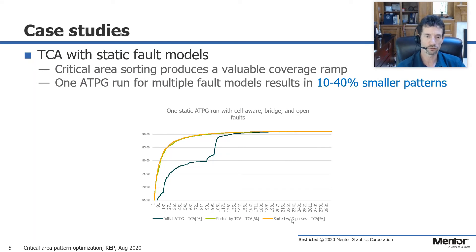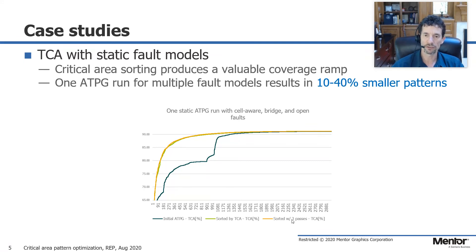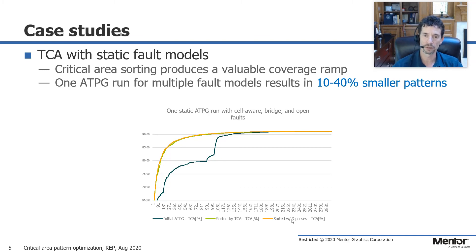You can read in the patterns, or you can read the fault models and create a new pattern set from scratch. When you create one pattern set without having to do a top-up run and so forth, we've seen 10 to 40 percent smaller pattern sets. This chart shows an industrial design where we created the patterns as one-shot ATPG, then ordered and sorted them based on highest total critical area (TCA) to least. Now if I have to truncate my patterns, I'm truncating patterns with the least value — not just based on number of faults, but based on the likelihood of those defects occurring.